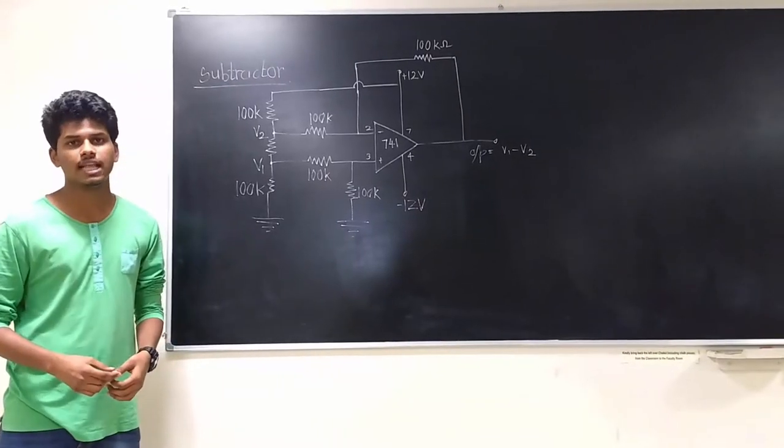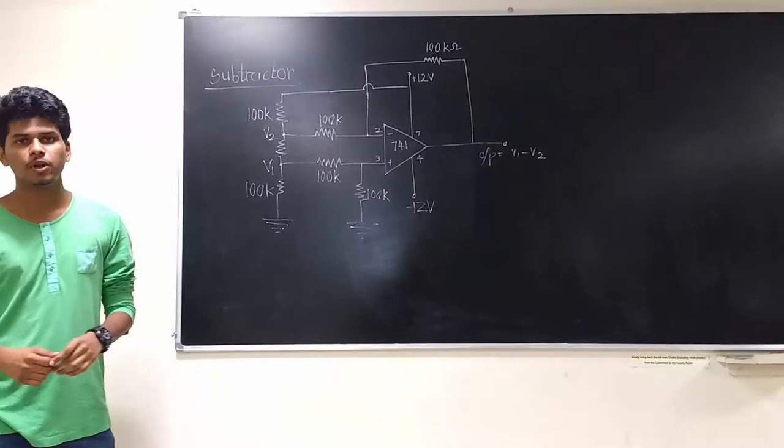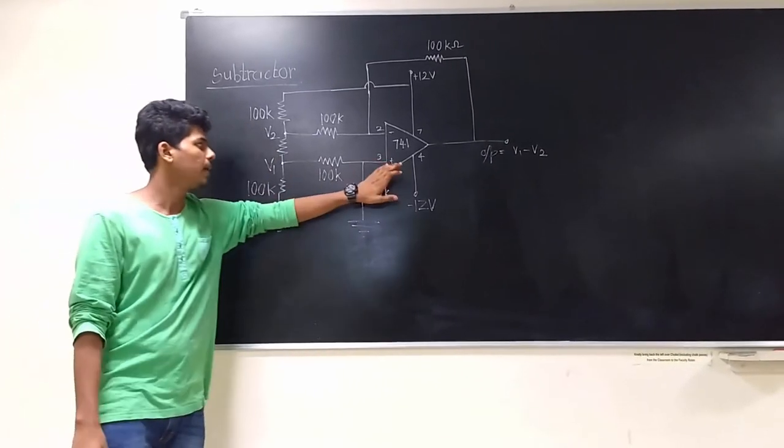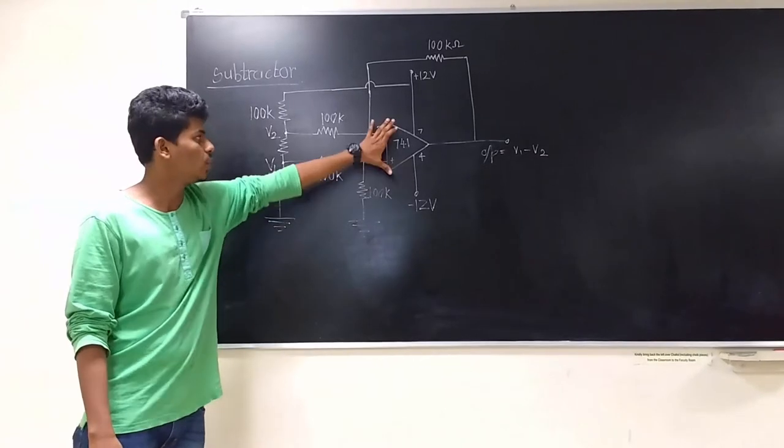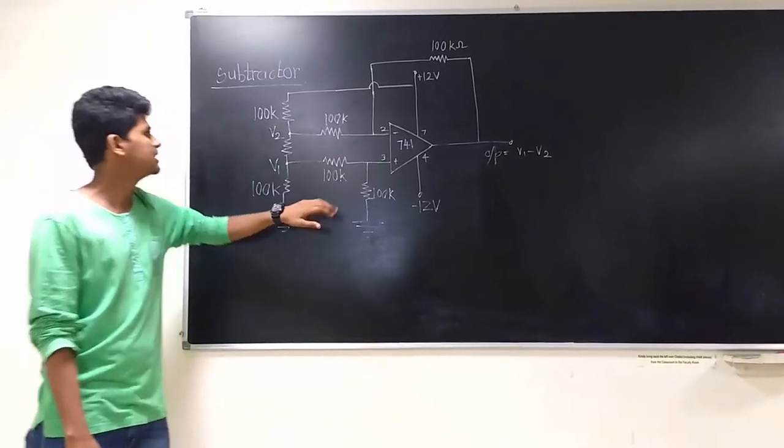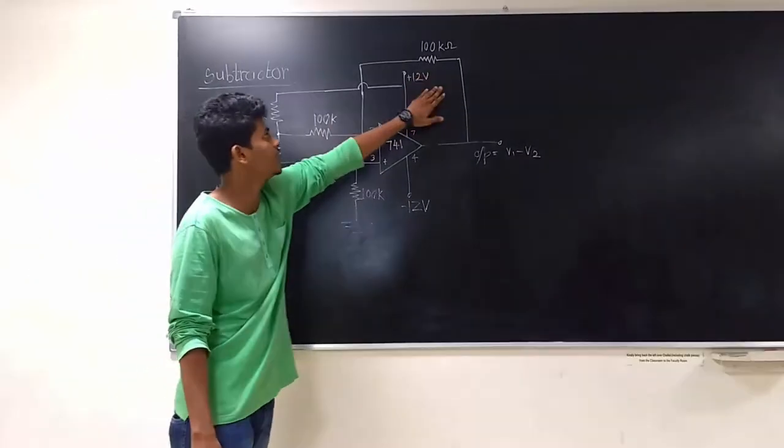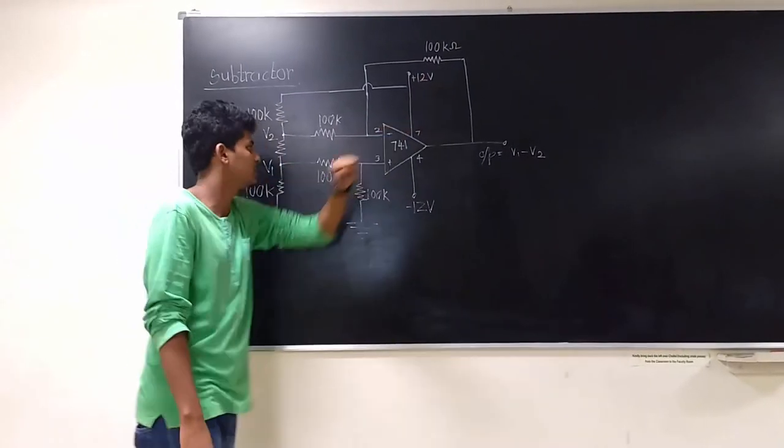Welcome to Analog Electronics Lab 2. In this video we will be looking into the subtractor. In the subtractor we use an op-amp 741, which is a dual power supply op-amp. Six resistances of 100k ohms are used and one resistance of 100k ohms is used as feedback resistance.